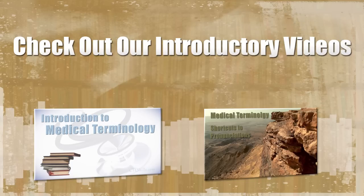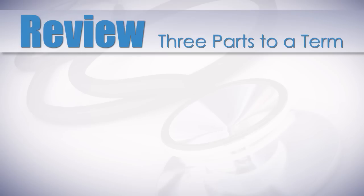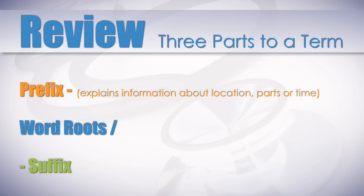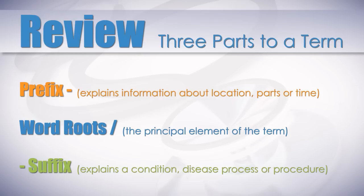Here's a quick review. There are essentially three parts or elements to a medical term: the prefix, the root word, and the suffix. The prefix explains information about location, parts, or time. The root is the principal element of the term. And the suffix explains a condition, disease process, or procedure.